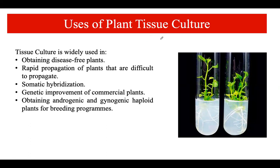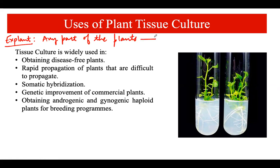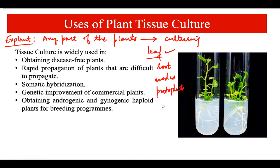Before discussing the uses of plant tissue culture, we need to understand the term 'explant.' An explant is basically any part of the plant that we use for the culturing process. For example, you can use a small part of a leaf, the root, the nodes, single cells, protoplasts, shoots, or meristem tips — any component of the plant can serve as an explant. This is a very important terminology for this technique.